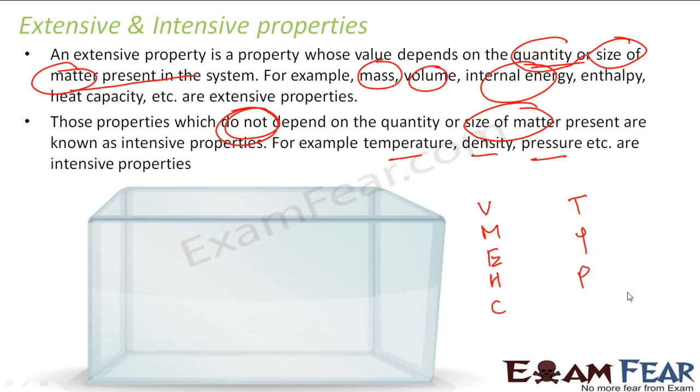The heat capacity is C. We will take these values also. Temperature is T, density is rho, pressure is P. So there is a big box covered totally and it has some gas whose volume is V, mass is M, internal energy is E, enthalpy is H, heat capacity is C, temperature T, density rho, and pressure P.